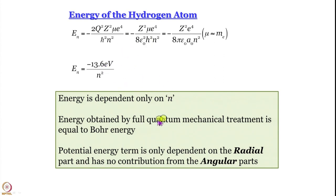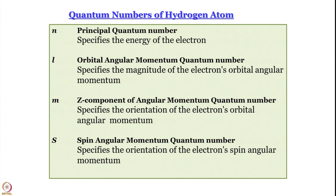Only the radial part makes a contribution to the total energy. We have now reached a stage where we have talked about three quantum numbers: n, l, and m. We reconcile with the old quantum theory: n specifies the total energy of the electron in the atom; l talks about orbital angular momentum; m talks about the z-component of that orbital angular momentum. What we have not obtained — and will not obtain from the Schrödinger treatment — is the spin angular momentum quantum number. Spin arises from relativistic quantum mechanics.